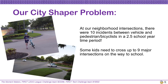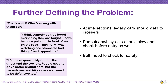When looking for our City Shaper problem, there were 10 incidents between vehicles and pedestrians or bicyclists in a two-and-a-half school year period at our neighborhood intersections. Some kids in our area even need to cross up to nine major intersections on their way to school. We chose to focus on this problem because it was a really big and dangerous problem in our community. Legally, cars should yield to crossers at intersections, but pedestrians and bicyclists should check before entry as well. They can't just dart out in front of cars. Both need to check for safety.